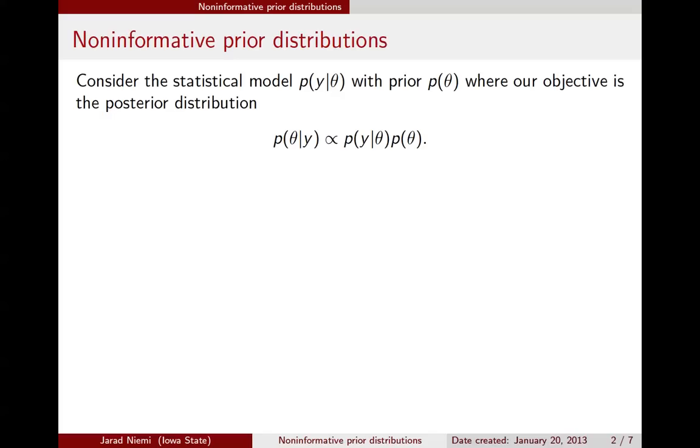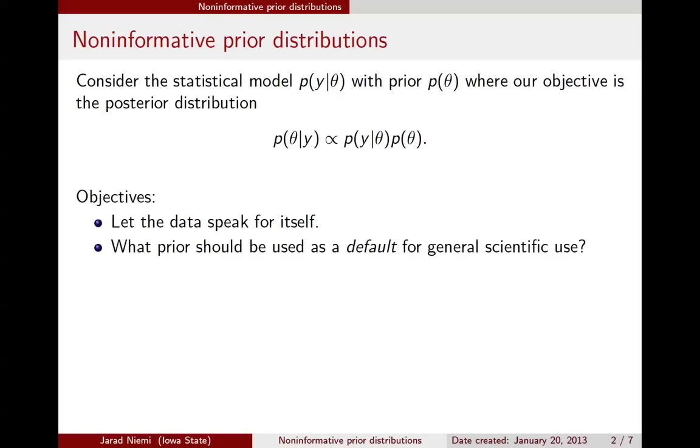So we might be interested in a situation where we want a prior for theta that perhaps lets the data speak for itself, or is a prior that's good for just default general scientific use. These objectives come under many names. We might talk about non-informative or vague or objective or reference or default priors. Some of these terms have very specific meanings, but are often used interchangeably with non-informative. I will try to be consistent here and just use non-informative.